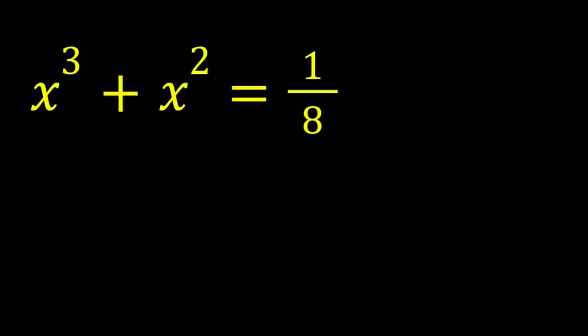We have x cubed plus x squared equals 1 over 8. I'll be presenting two methods even though I may not complete the first method. Let's start with the first one.